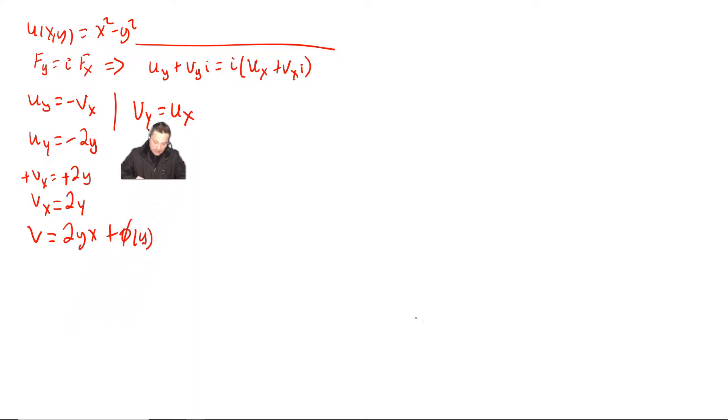But now go over here for a second and look here. You also know that v sub y is equal to u sub x, according to that equation. So, this is what you can do. You know u sub x. U sub x is equal to, come over here and differentiate with respect to x, the original u. So you have 2x.